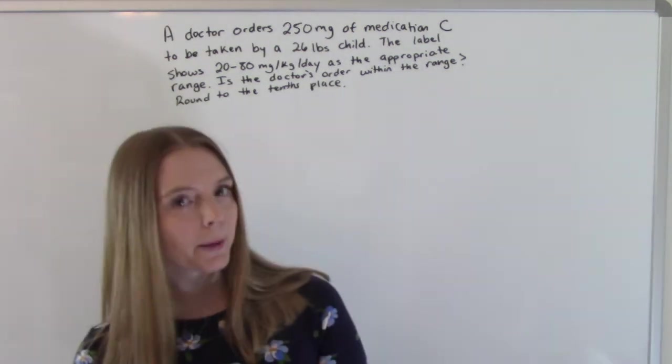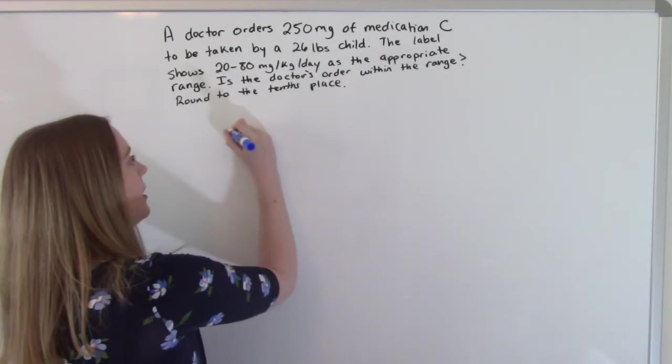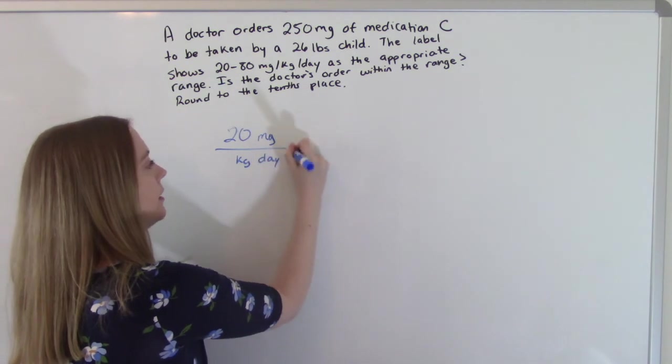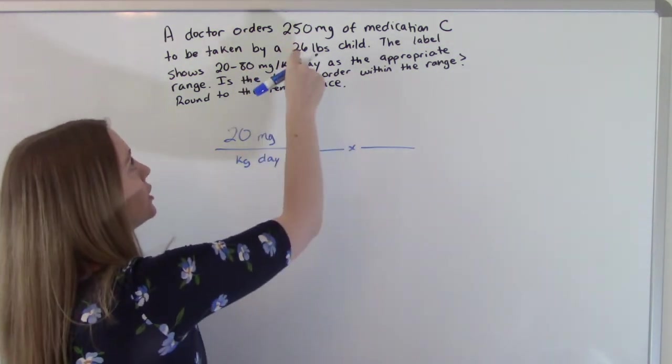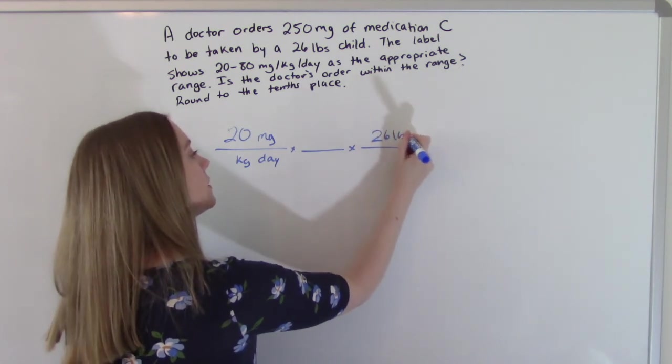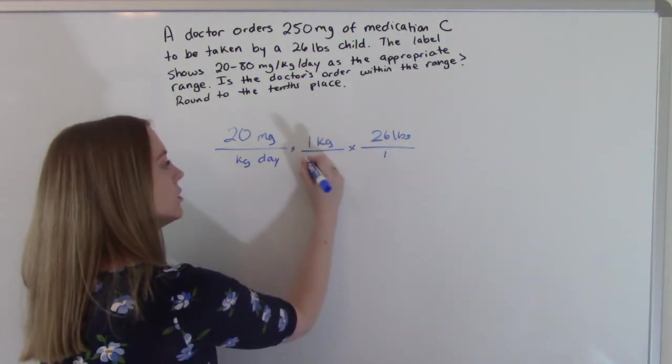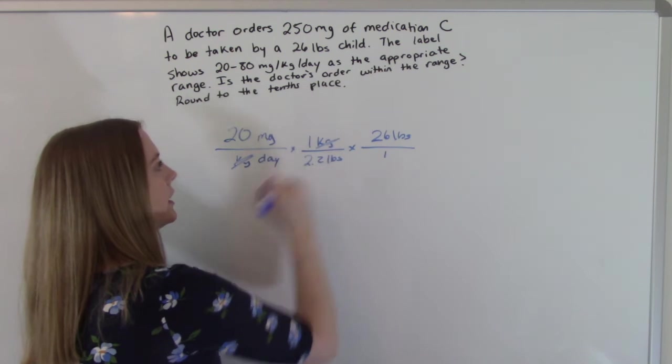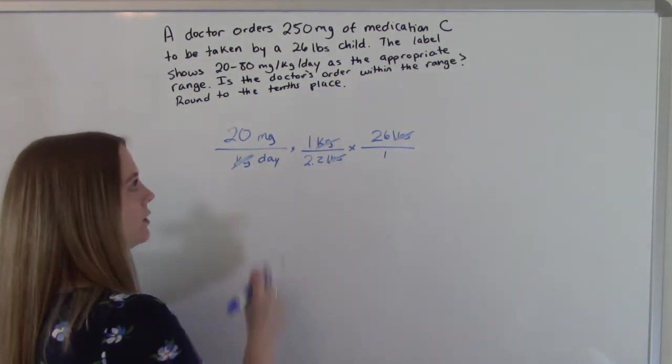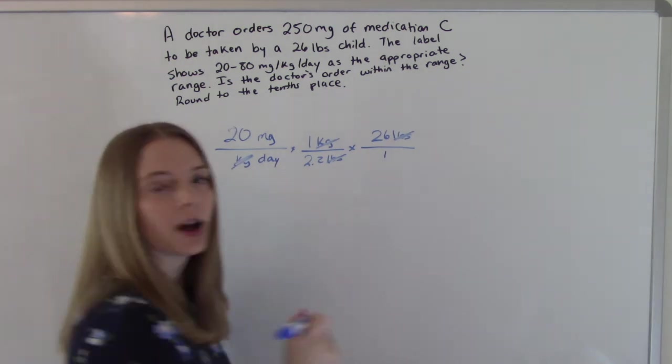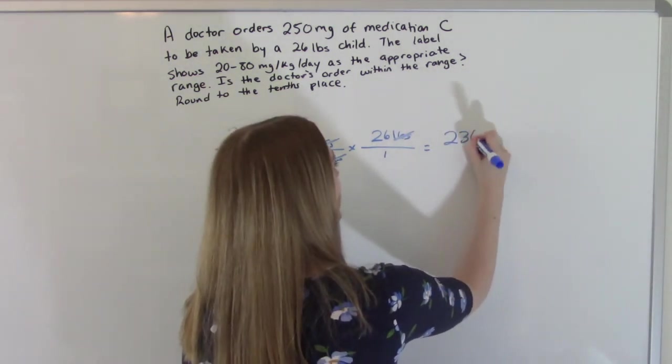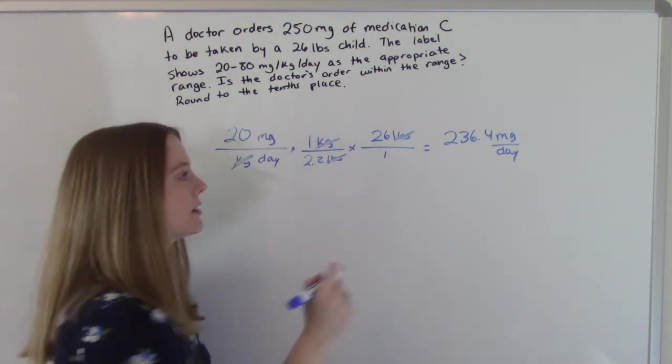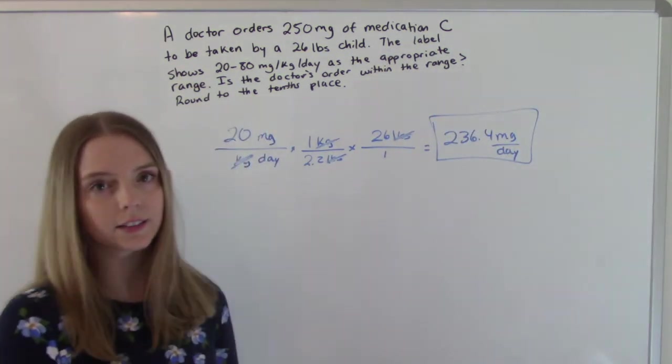So let's do our minimum and our maximum. So we have 20 for our minimum. So 20 milligrams per kilogram per day. And we know that our child weighs 26 pounds. And we need to convert kilograms to pounds. So we'll set it up like this. Cross off our kilograms. Cross off our pounds. That leaves us with milligrams per day. And we get 236.4 milligrams per day. So this is our lowest range we could possibly get.